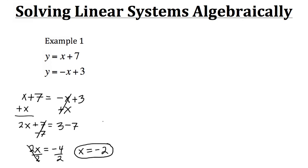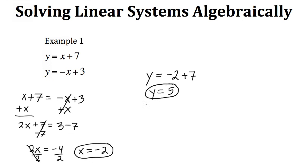Let's plug it into equation 1. So we have y equals x, which for us is negative 2, and then plus 7. Well if we take negative 2 plus 7, we get a y value of 5. So that's what our y value would be for the solution as well. Now just to make sure, we could plug this negative 2 into the second equation and see if we get the same y value.